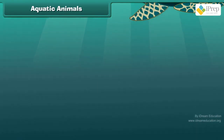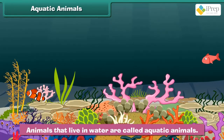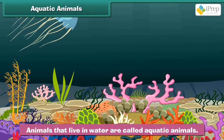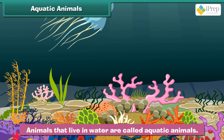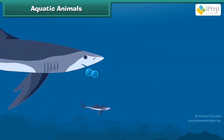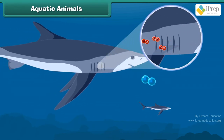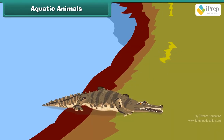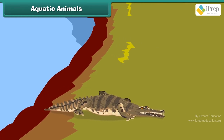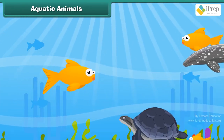Animals that live in water are called aquatic animals. Some aquatic animals breathe oxygen from the water through gills, while others go to the surface to breathe air through lungs. They swim in water.